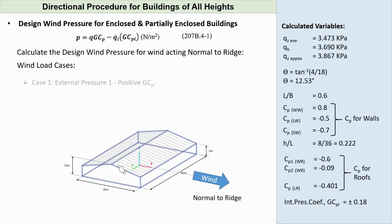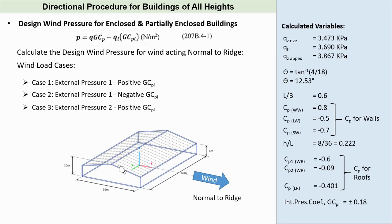Wind load cases are: Case 1, External Pressure 1 minus Positive Internal Pressure. Case 2, External Pressure 1 minus Negative Internal Pressure. Case 3, External Pressure 2 minus Positive Internal Pressure. And Case 4, External Pressure 2 minus Negative Internal Pressure.